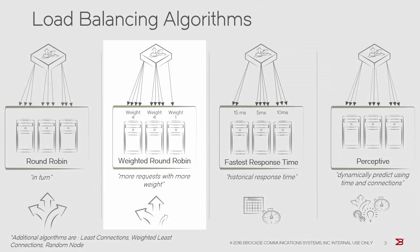Weighted round robin works in a similar way to round robin, but assigns more requests to nodes with a greater weight. Over a period of time, nodes will receive a number of requests in proportion to their weight. For example, a node with a weight of 4 will receive 4 times as many requests as a node with a weight of 1.